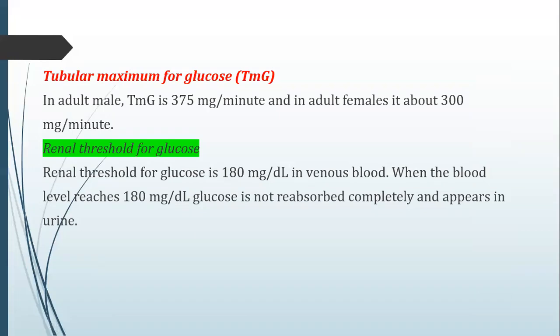Regarding tubular maximum (Tmax) for glucose: in adult males, Tmax for glucose (TMG) is 375 mg per minute; for adult females it is 300 mg per minute. The renal threshold for glucose is 180 mg per deciliter. When glucose level in the plasma is less than 180 mg/dL, there will be no glucose in the urine. But when blood glucose exceeds 180 mg/dL, glucose is not fully reabsorbed and will appear in the urine — this is the renal threshold for glucose.